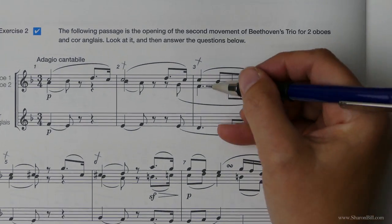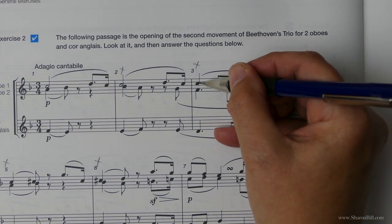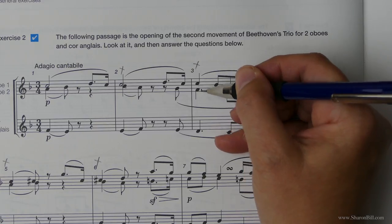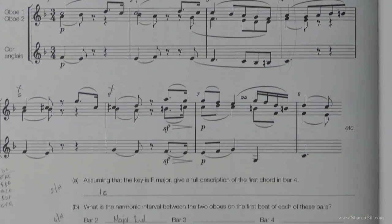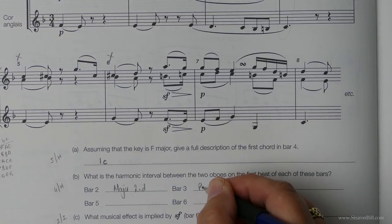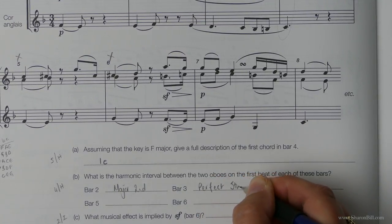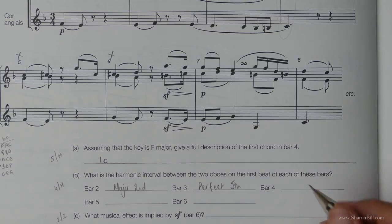Let's look at the one for bar 3. We've got a 1, 3, 5. We have a fifth of some sort. And it's an F to a C. And that would make a perfect fifth. Nothing's been chromatically altered there.